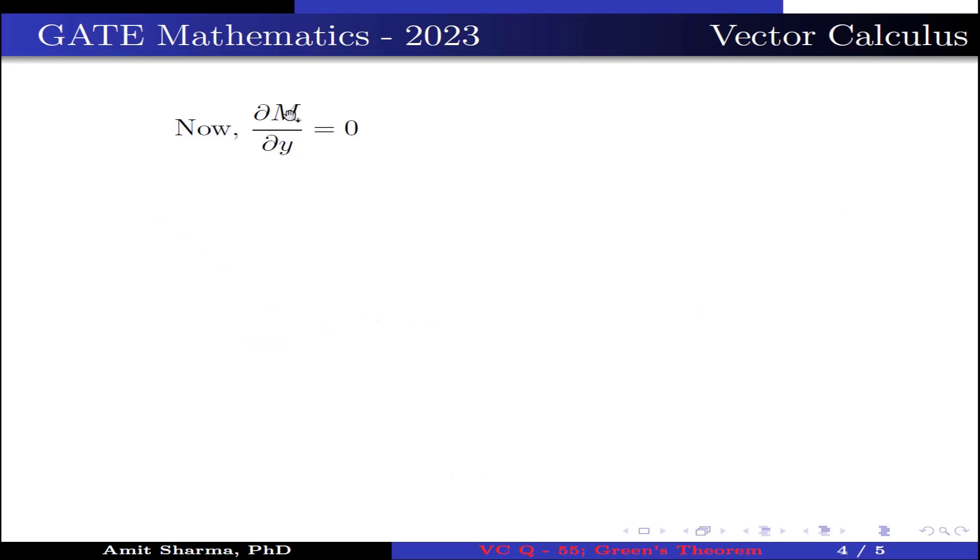Now, we have to find ∂M/∂y, the partial derivative of M with respect to y, which is equal to 0, and partial derivative of N with respect to x is equal to 4.